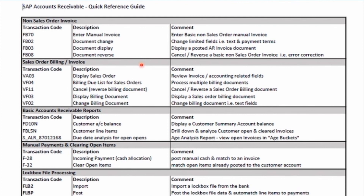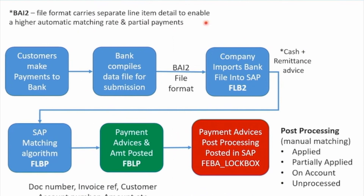The PDF quick reference guide lists transactions for manual non-sales-order invoices, automated billing from sales orders, the reporting section, manual payments and clearing, and lockbox processing. There's also a note that if you want to create test lockbox sample files, there's a program you can use with the SE38 transaction code. Remember to reference the overall flow — customers making payments, the bank compiling a BAI2 file, importation into SAP, automated matching and posting where matches are found, and finally the manual matching process. Thanks very much for taking the course.